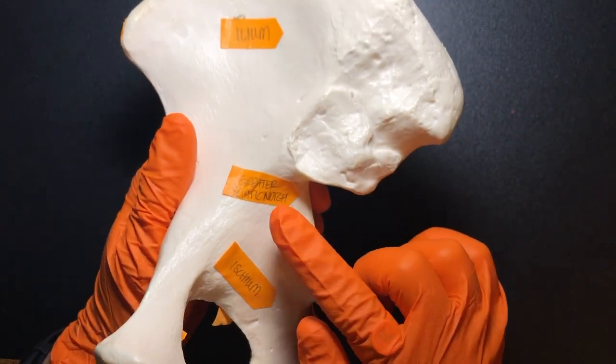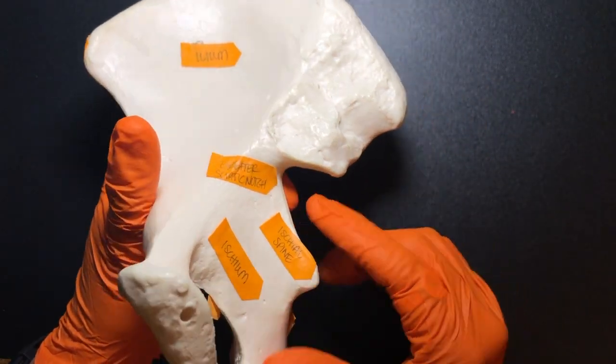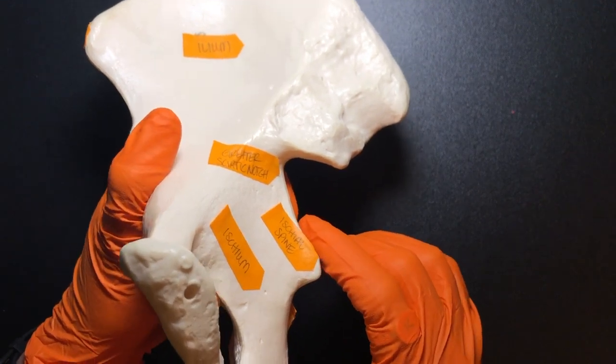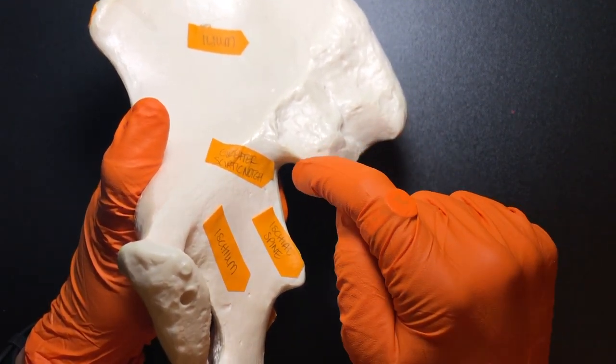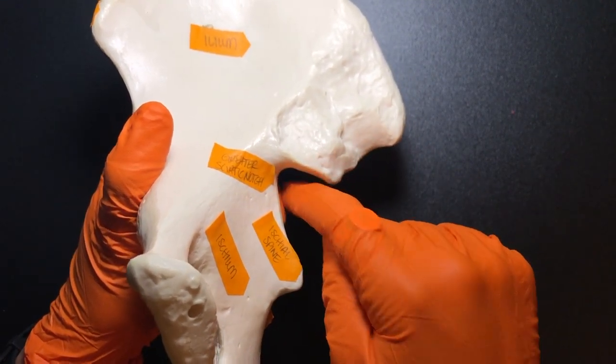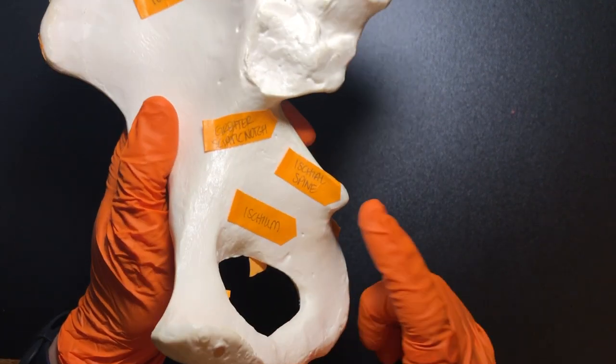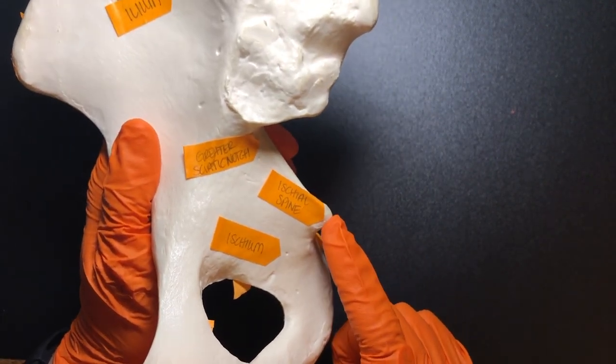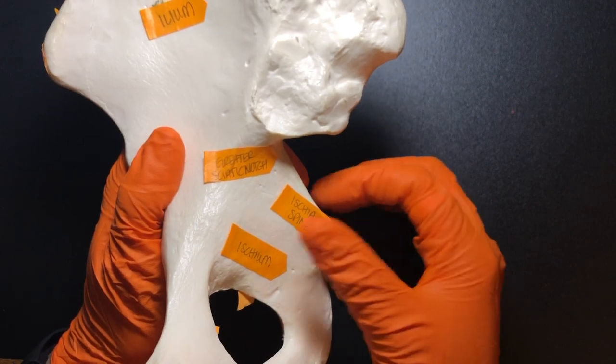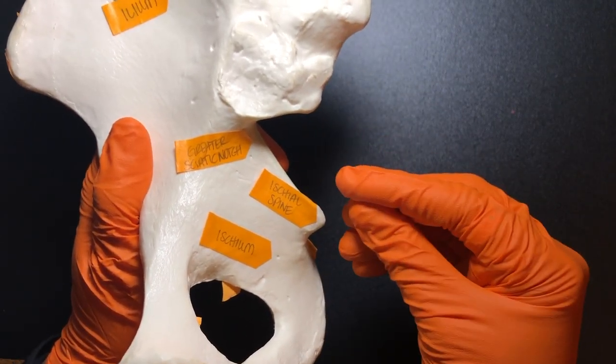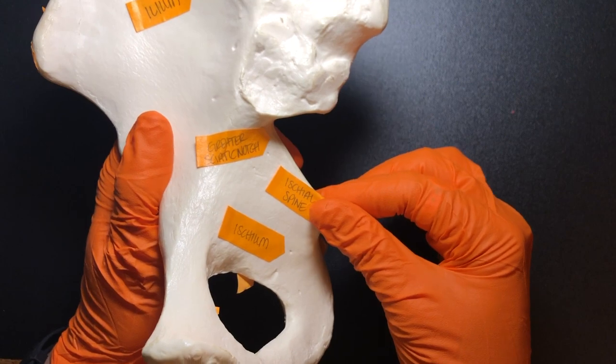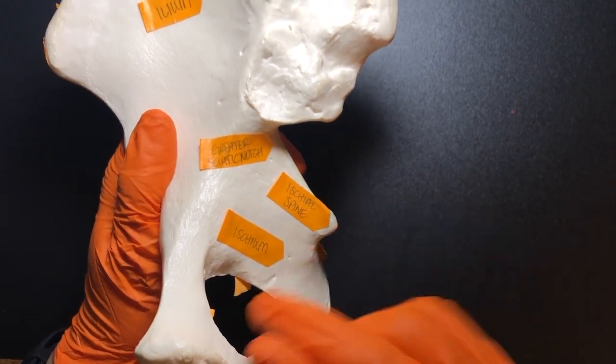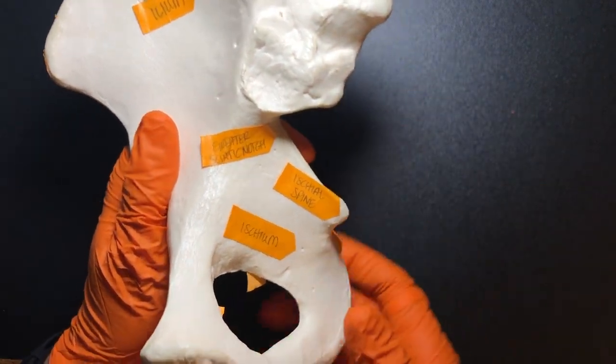Then right here we have the greater sciatic notch, and it's named as such because as we're going to see in a few weeks, the very large sciatic nerve is going to run through this area. Then we have the ischial spine. Remember, anytime we have these little bony projections, that's where something is likely to connect. So that helps us make sense of why we have all these little bony features.